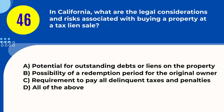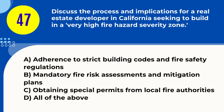Question 46. In California, what are the legal considerations and risks associated with buying a property at a tax lien sale? A. Potential for outstanding debts or liens on the property B. Possibility of a redemption period for the original owner C. Requirement to pay all delinquent taxes and penalties D. All of the above. Answer: D. All of the above. Explanation: Buying at a tax lien sale may involve risks like existing debts, a redemption period for the original owner, and paying delinquent taxes.